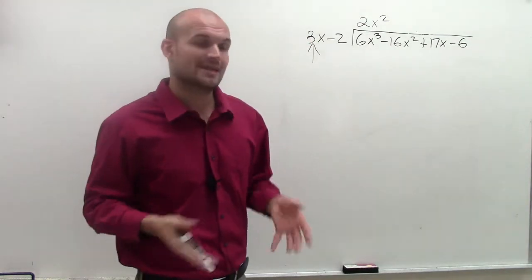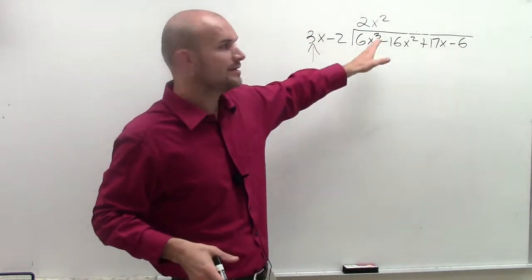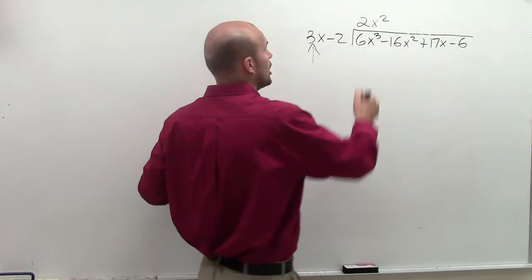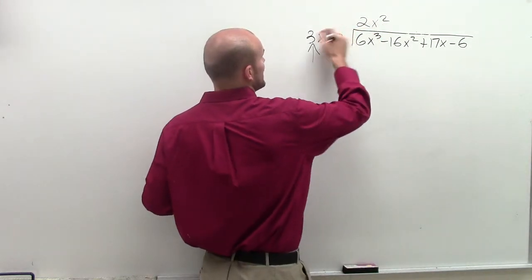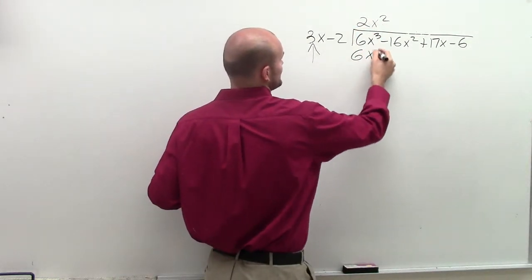The way we can always double check that is, remember, once you divide a number in, then we multiply our term back. So 2x squared times 3x is 6x cubed.